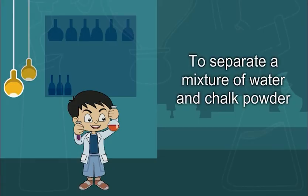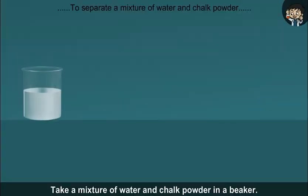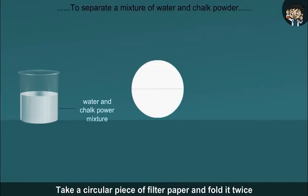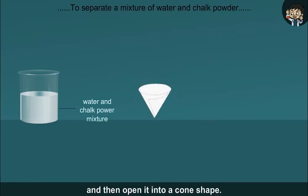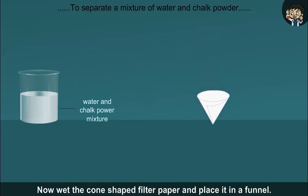To separate a mixture of water and chalk powder. Take a mixture of water and chalk powder in a beaker. Take a circular piece of filter paper and fold it twice and then open it into a cone shape. Now wet the cone-shaped filter paper and place it in a funnel.